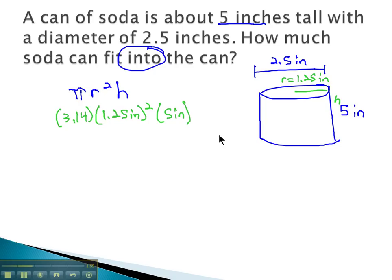And now we use order of operations. Exponents first, so we have 3.14 times 1.25 squared is 1.5625 square inches times 5 inches.